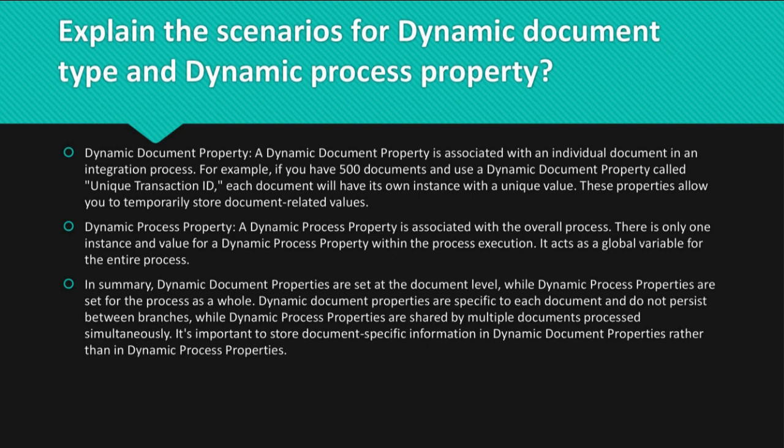Dynamic document properties are specific to each document and do not persist between branches, while dynamic process properties are shared by multiple documents processed simultaneously. It's important to store document-specific information in dynamic document properties rather than in dynamic process properties.